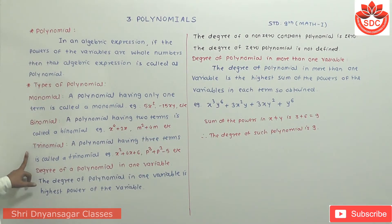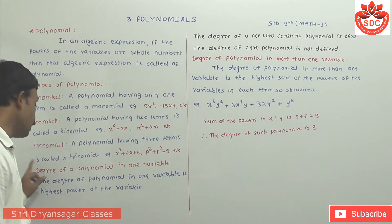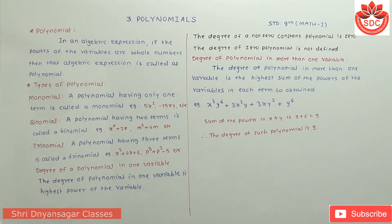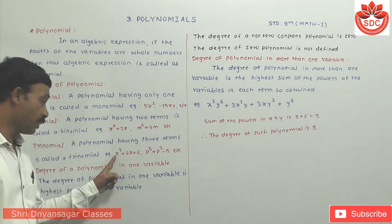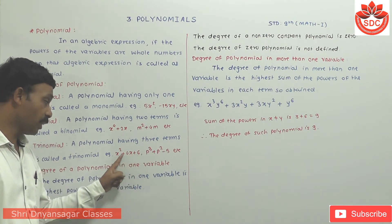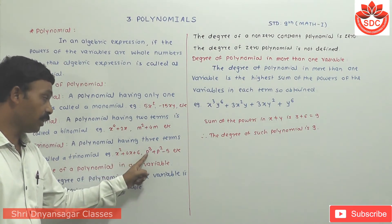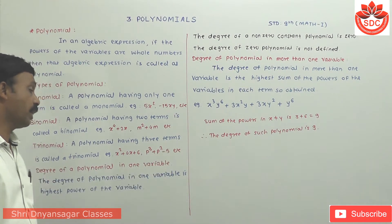Trinomial. Tri means 3 — the polynomial having three terms is called as the trinomial. For example: x² plus 4x plus 6 — there are three terms. Also b³ plus b² minus 5, etc.